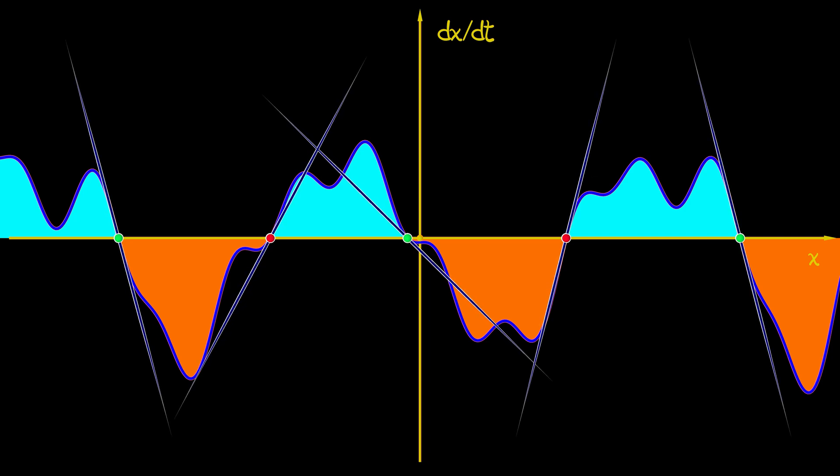Positive slope, unstable. Negative slope, stable. That's it. That's the stability criterion.